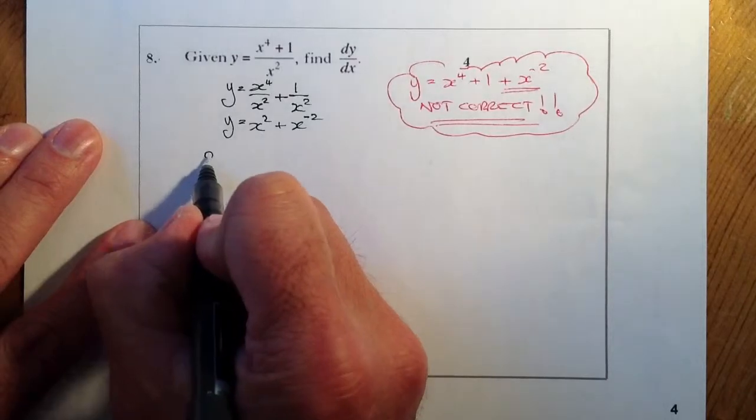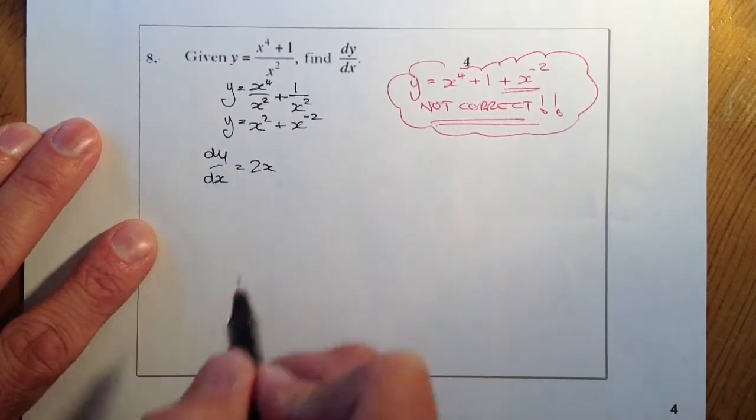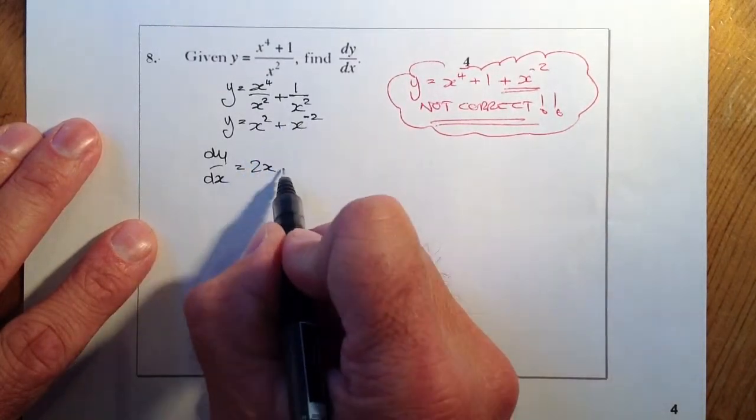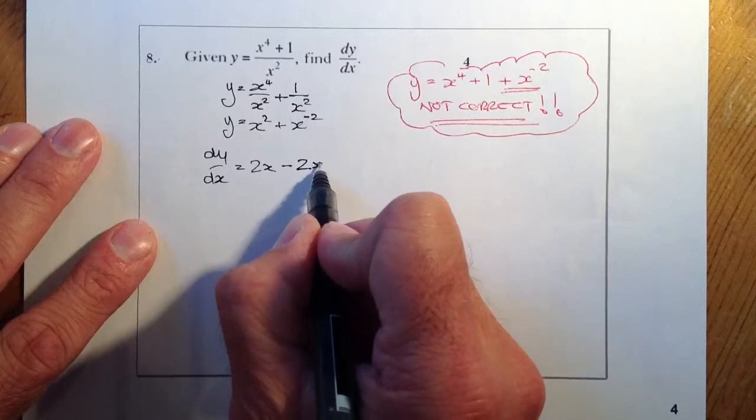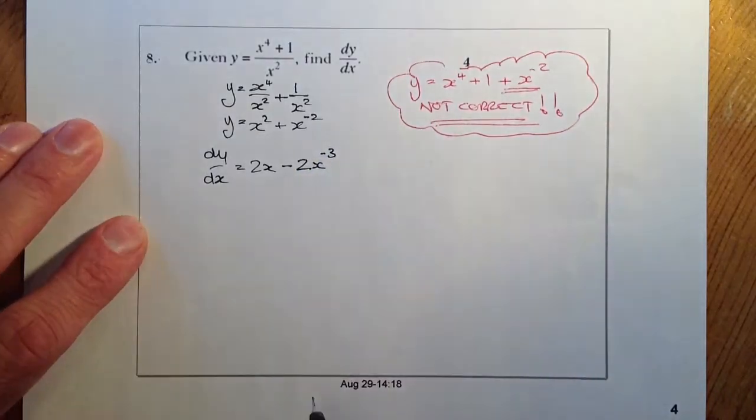From there we can go ahead and differentiate. So differentiating this one, 2x from that side there. I've got minus 2 times the 1 at the front, so that's going to give me a minus 2x. Reduce the power by 1, takes me to minus 3.